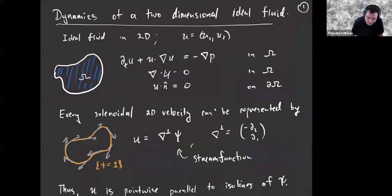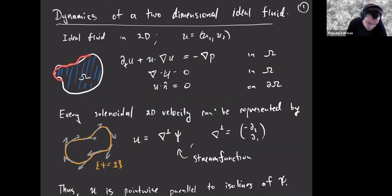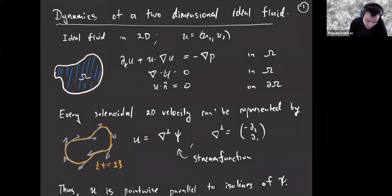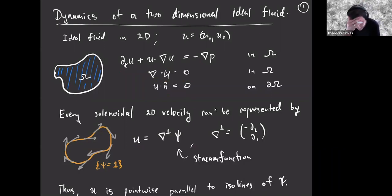Let's start with the 2D Euler equations. We'll be considering mostly fluids that are confined in some simply connected domain. They solve this momentum equation here. They're incompressible, so this is conservation of mass, and they're tangent to the boundary. I think everybody here is familiar with these equations.